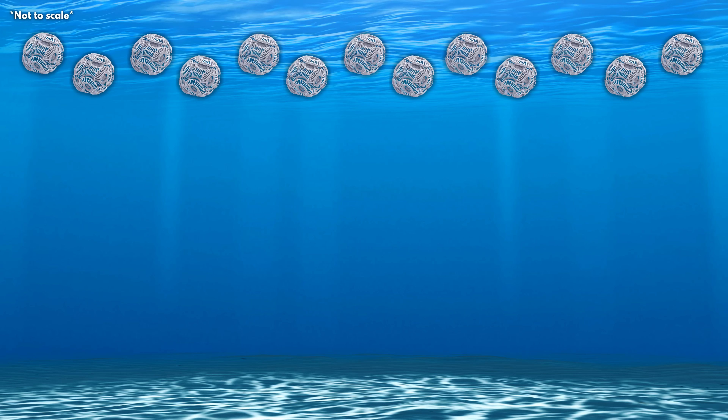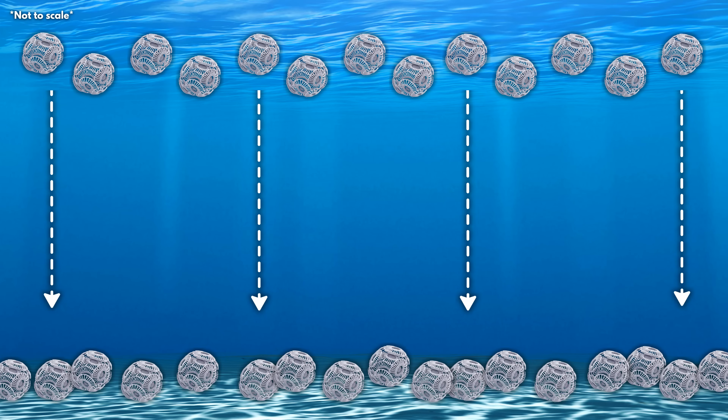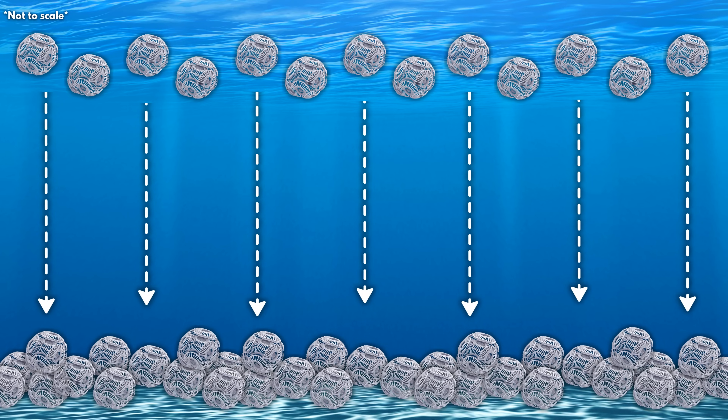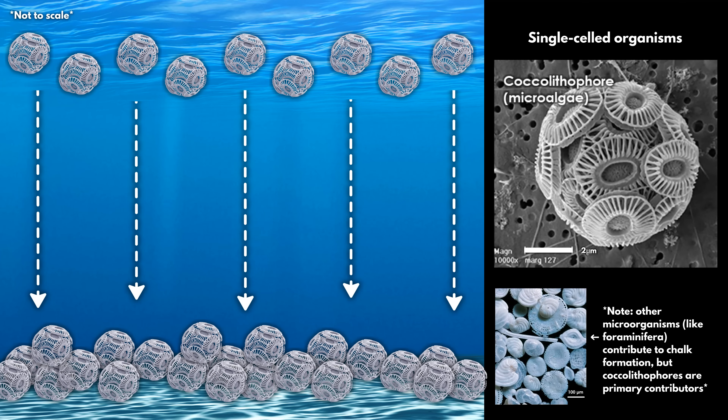But actually, the process that forms chalk involves a very specific kind of organism that had to evolve before chalk could form. These organisms are called coccolithophores, which are single-celled microscopic algae that evolved around 160 to 130 million years ago. Before this, there were several other kinds of microscopic algae in Earth's oceans, but none left behind massive chalk deposits like coccolithophores. So what makes these little guys so special? Why do they produce chalk?